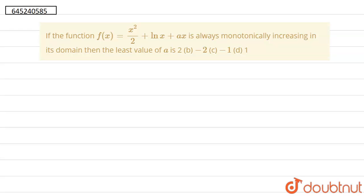So hello everyone. In this question, they said that if the function f(x) equals x squared over 2 plus ln x plus ax is always monotonically increasing in its domain,